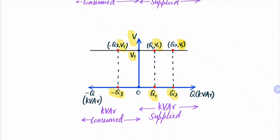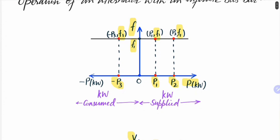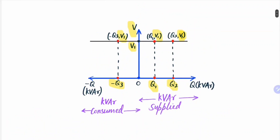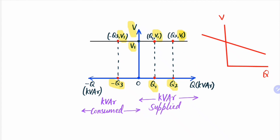In previous lectures we have discussed these characteristics for an alternator — that is, the fp characteristic of an alternator was shown where this is f and this is p. Similarly, the vq characteristic of an alternator was also discussed in detail in the previous lecture.